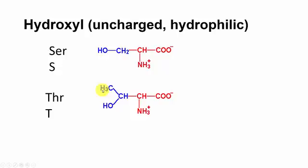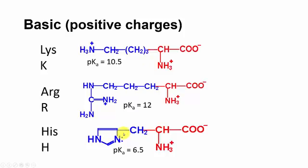The hydroxyl amino acids are serine — essentially alanine with a hydroxyl group on it — and threonine, a branched chain one very much like valine except it has a hydroxyl group instead of another methyl group. The basic amino acids are lysine (K), which has a four-carbon side chain with an amino group at the end that has a pKa of 10.5, so it usually carries a positive charge at physiological pH.